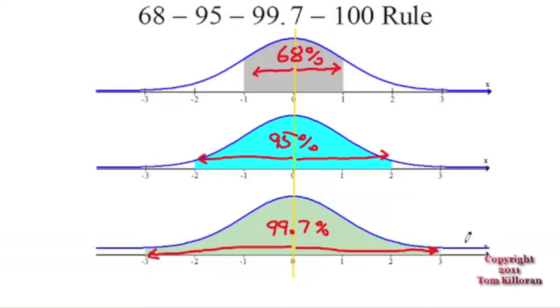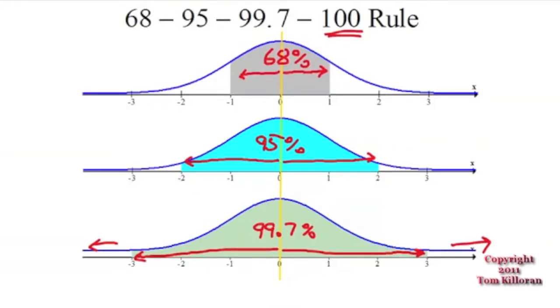Now if you go on forever, and this graph does go forever in both directions, then you're talking about that 100% thing.